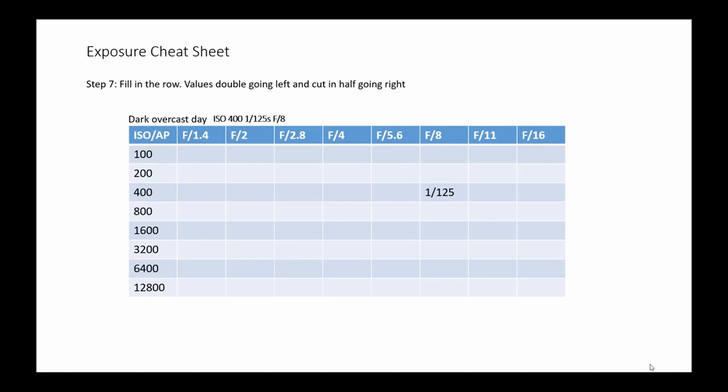Now the row is full. The next step is to fill in the column - the values will double going down because the ISO is more sensitive, and cut in half going up. Just like this.